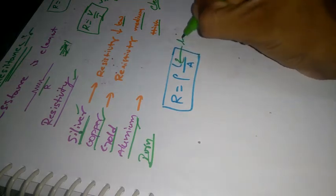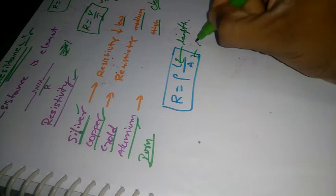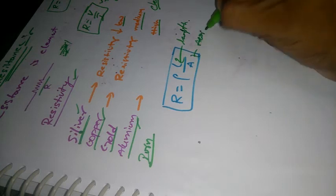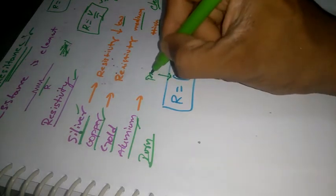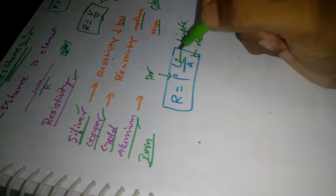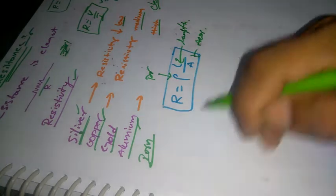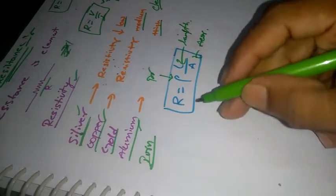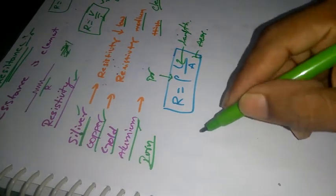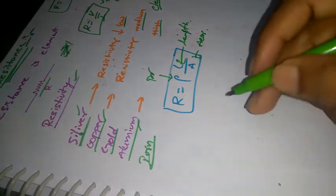The length is L and this is area A. R is a property — property is very important. So here we can see the first atom.